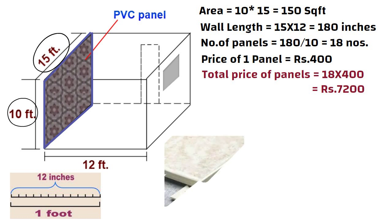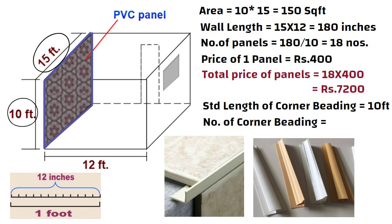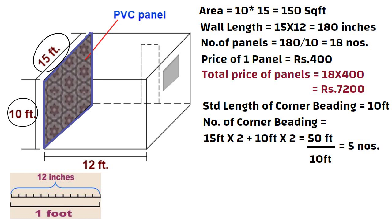After this we will require PVC corner bedding putti, which is required to be installed on all 4 sides of the wall. The standard length of 1 PVC corner putti is 10 feet. The total number of corner bedding putti is equal to the perimeter of the wall divided by the standard length. The perimeter is 15 feet x 2 plus 10 feet x 2, equal to 50 feet. So we will require 5 number of corner putti.